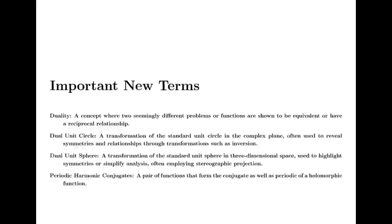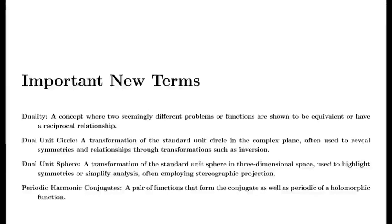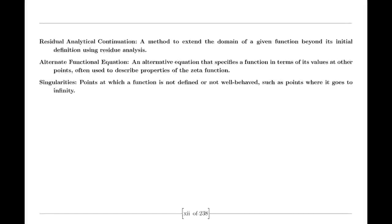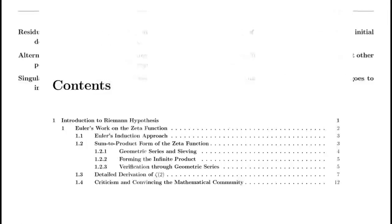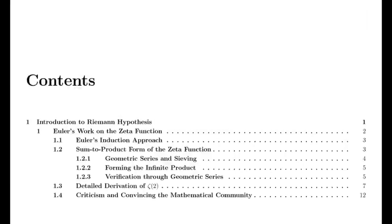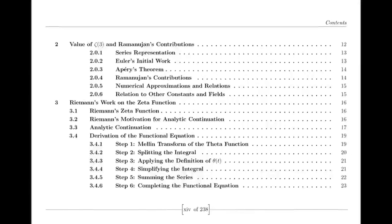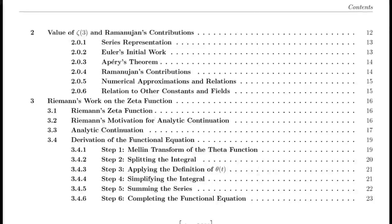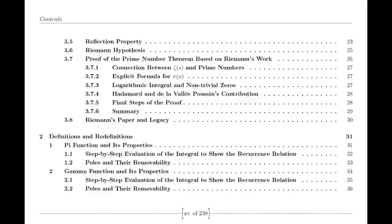Moving to the 19th century, we encounter Bernhard Riemann, who expanded our understanding of complex functions. Riemann introduced analytic continuation, allowing the extension of functions beyond their initial domains. He extended the Riemann zeta function — initially defined only for complex numbers with real parts greater than 1 — to the entire complex plane except s=1, where it has a simple pole.